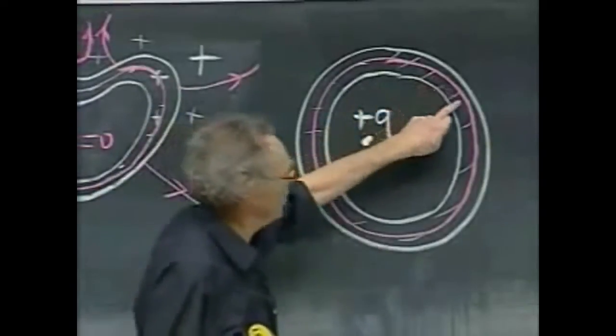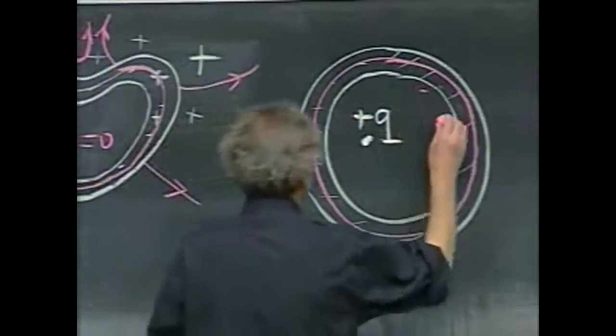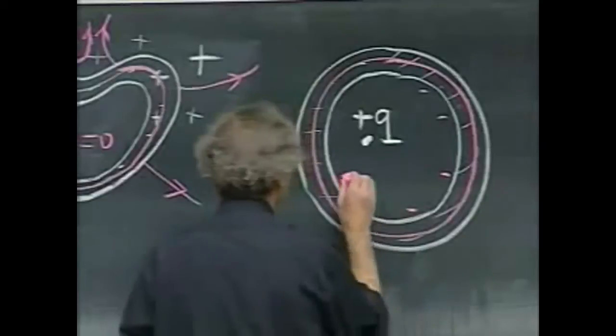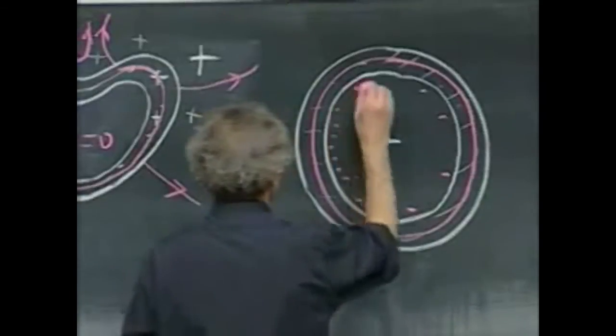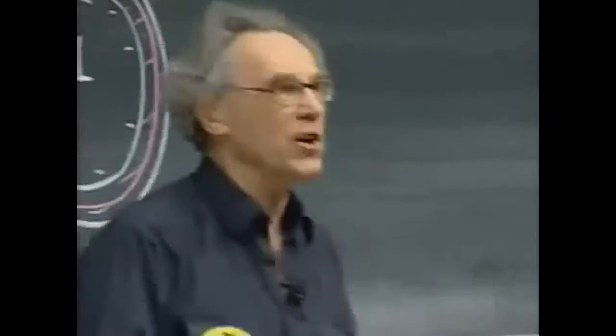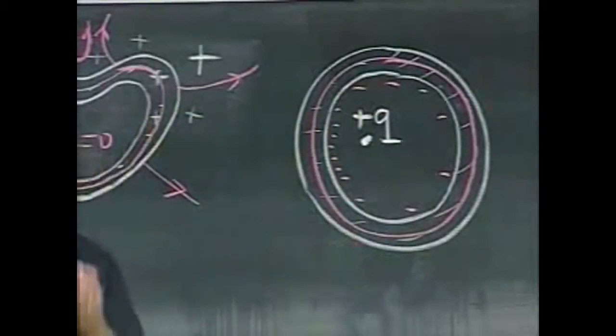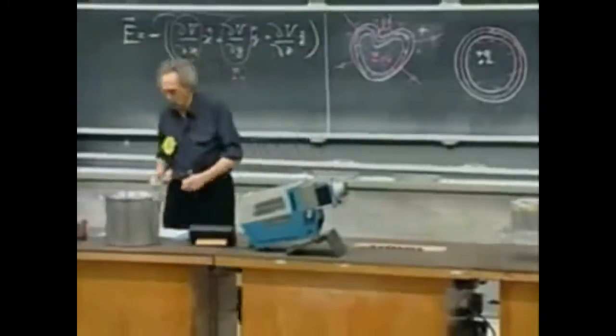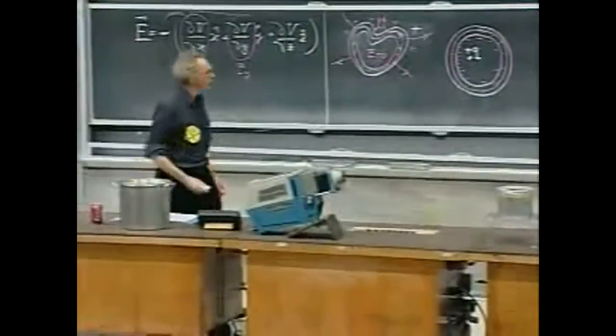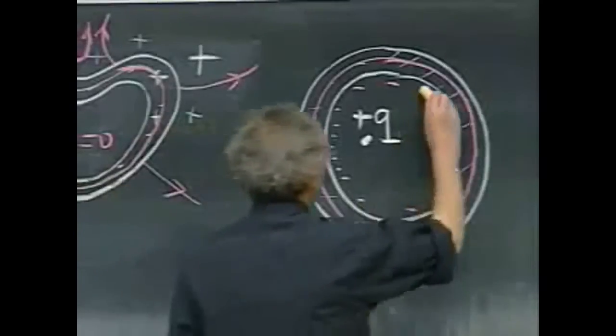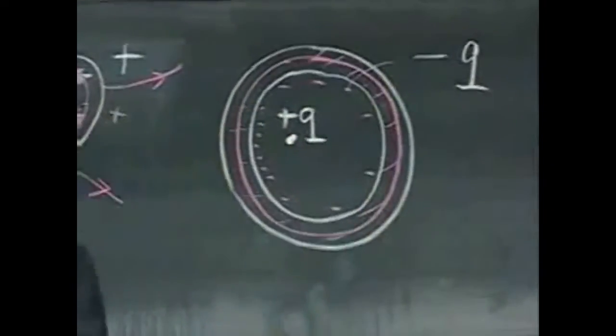Since there can be no charge in the conductor itself, negative charge must now accumulate on the inside of that surface, so that the net charge inside this surface is zero. So now we do get charge on the inside. And how much charge do you get on the inside? Exactly minus Q, so that the sum of the two is zero.